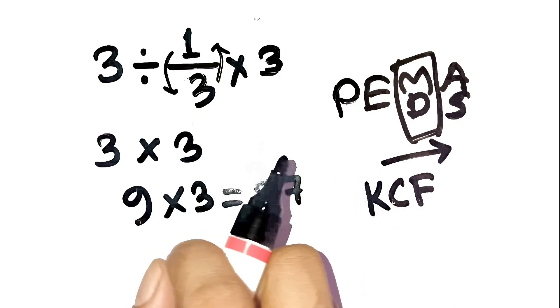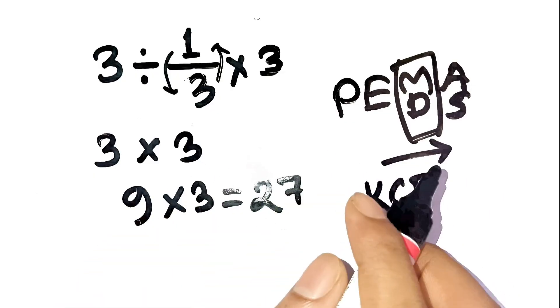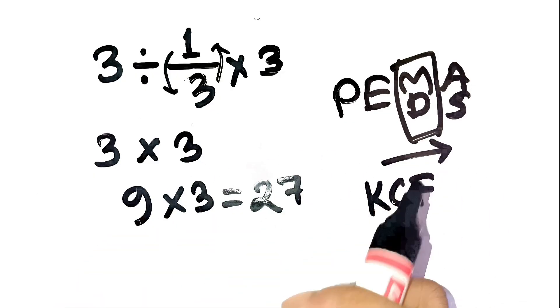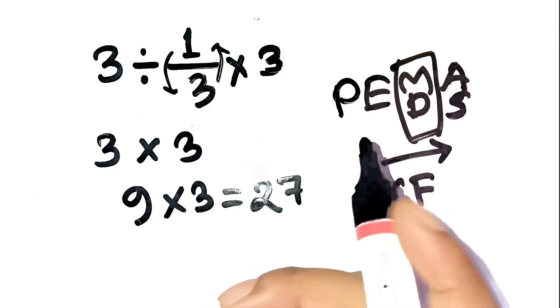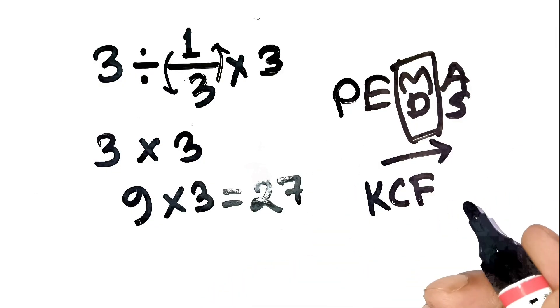It's one of those looks easy but isn't problems. If you still think it should be three or have a different take, drop your explanation in the comments. I'd love to see how you work it out. Thanks for watching, and don't forget to share this with a friend who always tries to cancel numbers in a hurry.